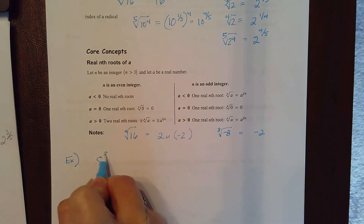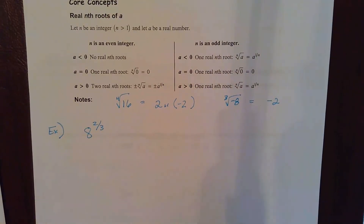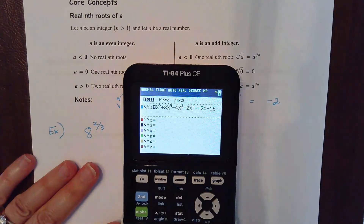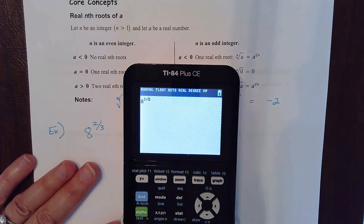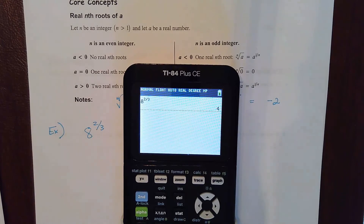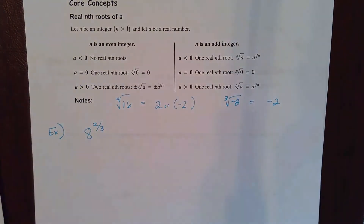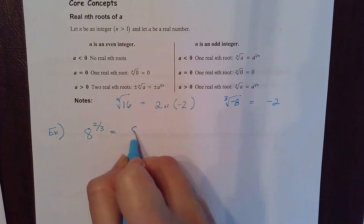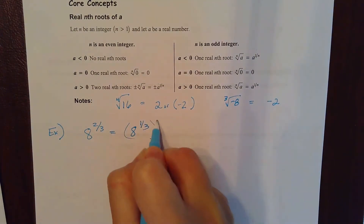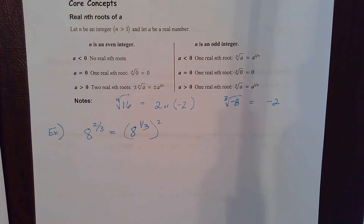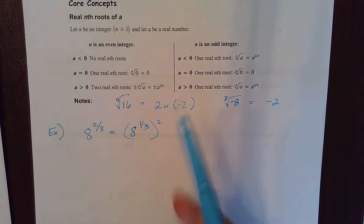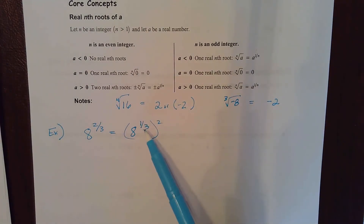Some other examples — I want us to be able to evaluate without using a calculator. You could type this into your calculator using the caret button and type in the fractional exponent and get the answer, and I'm not taking away your calculators for assessments. But I want you to show me the process of how you would do this without a calculator. When you have a power and a root, I want you to think about separating the root from the power — it's like taking the opposite of your exponent properties. It doesn't really matter the order, but I always do root first then power.